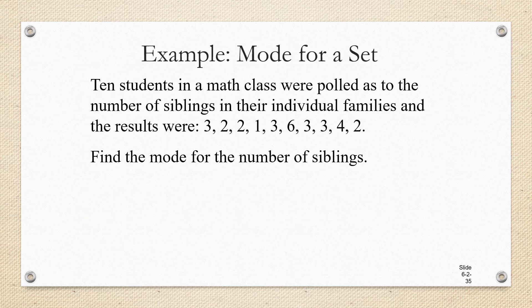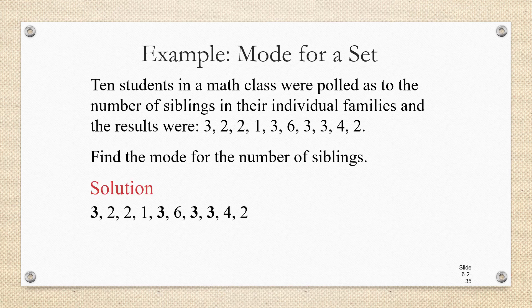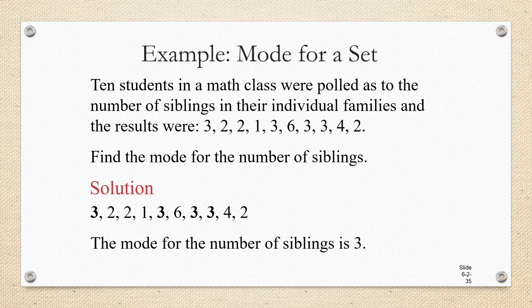Let's look at an example of finding the mode of a data set. Here we have 10 students in a math class, polled as to the number of siblings in their individual families. They said there were 3, 2, 2, 1, 3, 6, 3, 3, 4, and 2. We're supposed to find the mode for the number of siblings. Looking through the list, you notice that there are four threes and none of the other data values occurs four times or more. So three is the mode for the number of siblings.